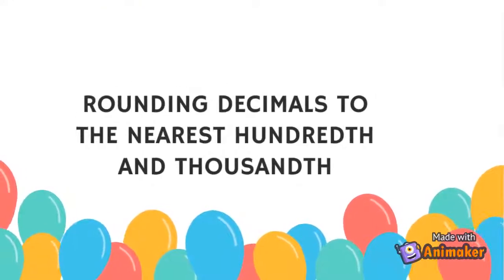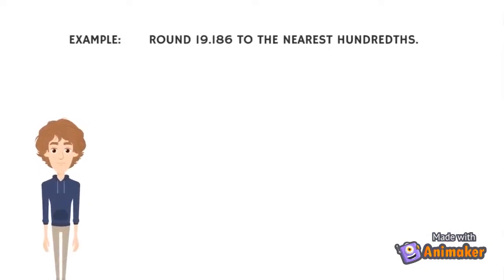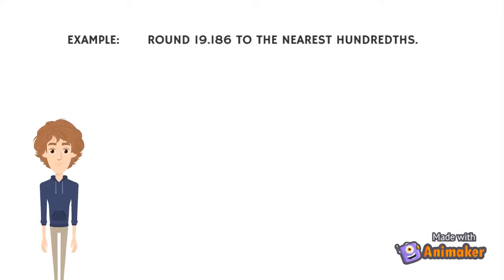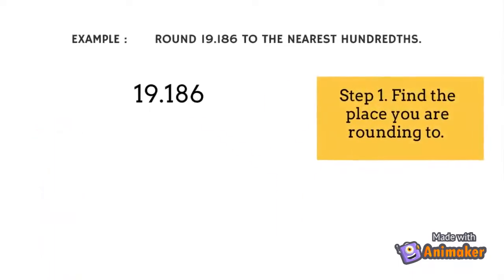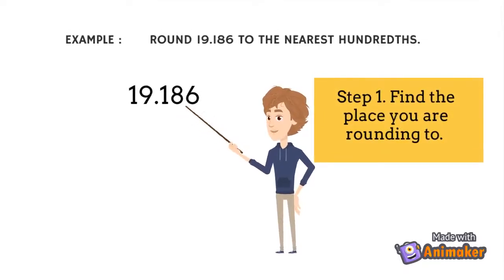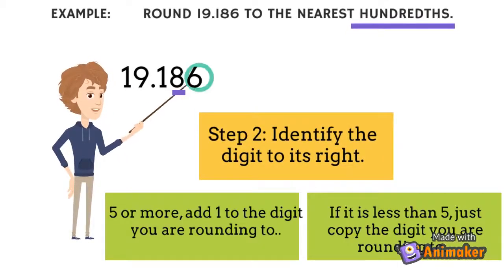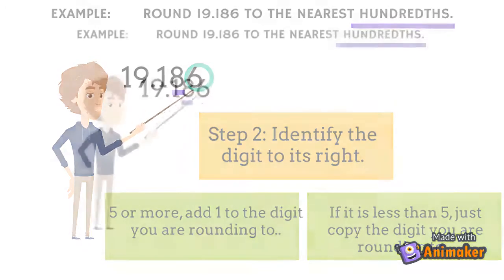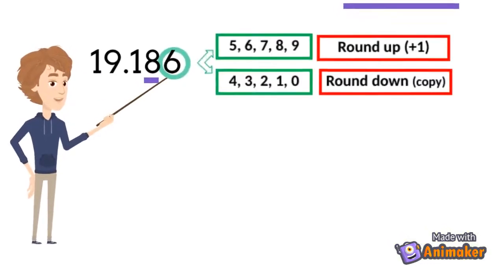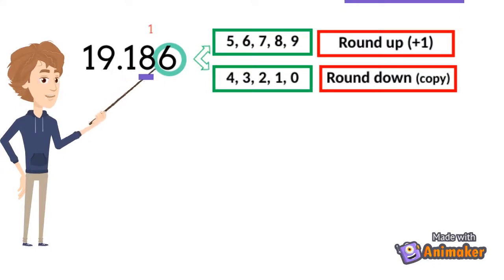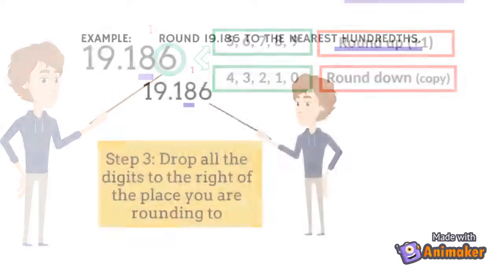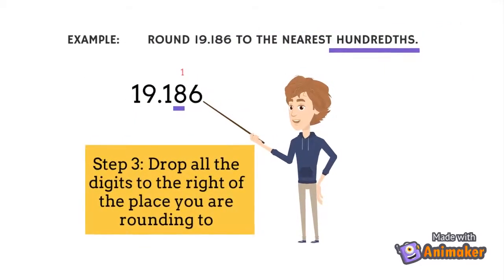Rounding off decimal numbers. Example: Round 19 and 186 thousandths to the nearest hundredths. Step 1: Find the place you are rounding to. In this example we need to round off to the nearest hundredths, so underline the digit in the hundredths place. Step 2: Identify the digit to its right. If 5 or more, add 1 to the place you are rounding to. If it is less than 5, just copy the digit to be rounded off. The digit on the right side of the digit to be rounded is 6, which is greater than 5, so we need to add 1 to the digit that we need to round to.